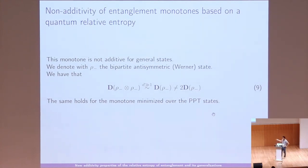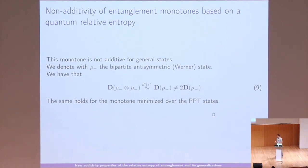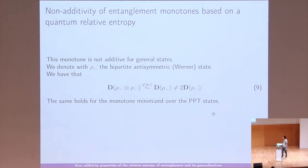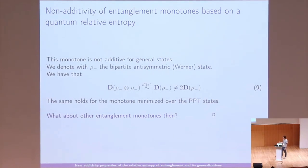What we can show is that this monotone is not additive for general states — regardless of which quantum relative entropy you choose, you will not find additivity this way. We demonstrate this by taking two example bipartite states — Werner states — and showing that for large enough dimension d, D(ρ₋ ⊗ ρ₋) is almost twice D(ρ₋), which differs from what additivity would predict. The bad news is that even when we minimize over PPT states rather than separable states, nothing is additive.